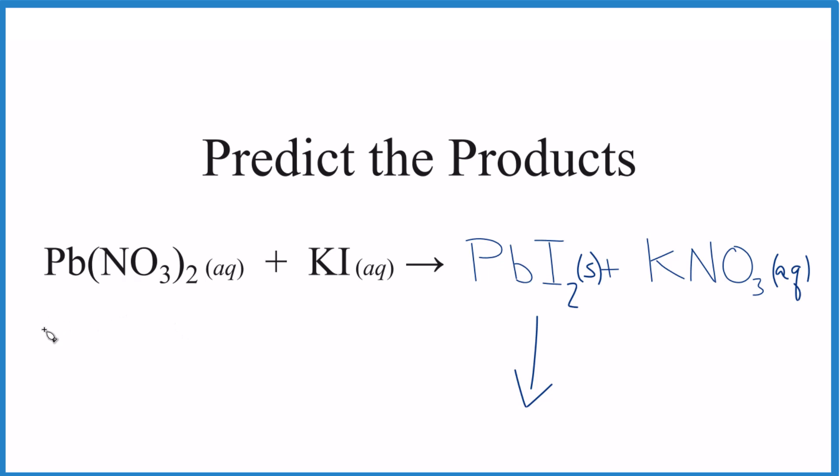So that's it. That's how you predict the products of Pb(NO3)2 plus KI, lead 2 nitrate plus potassium iodide. You need to recognize it as a double displacement reaction first. And then you need to get the products, make sure that their charges are balanced. And then you need to figure out if there's a solid. And if there is, it's a precipitation reaction. And this is the precipitate.